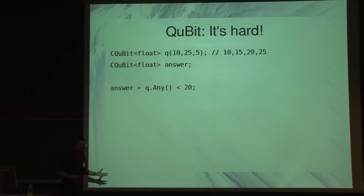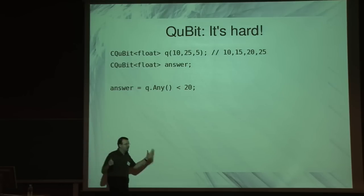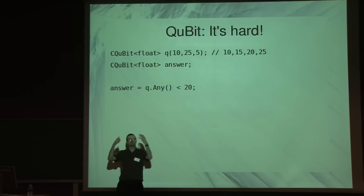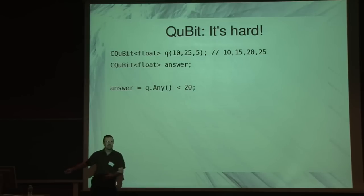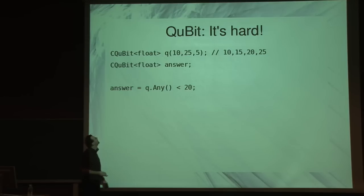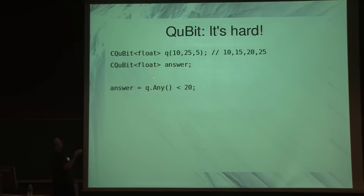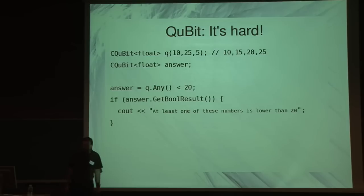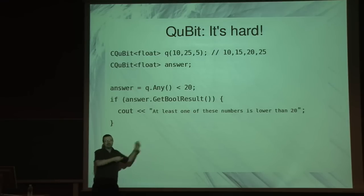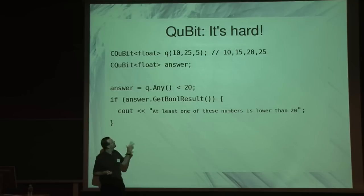This is the really freaky thing about quantum mechanics. The answers only happen when you look at it, which means you then destroy the quantum superposition — the state collapses, to use the geek vernacular. So this performs the less-than-20 operation on everything at the same time. And then when you say, I want you to copy that into answer, it does — it gives you an answer if any of those numbers is less than 20, but in doing so destroys Q, and there's nothing left in Q anymore.